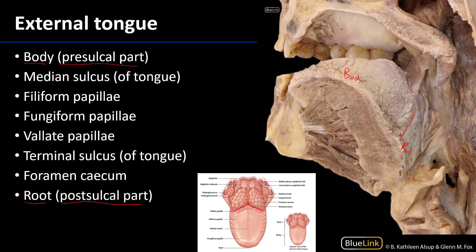The palatoglossal fold marks the boundary between the oral cavity and the oropharynx. There is also a median sulcus — because this donor has been sagittally sectioned we don't see it on the specimen, but we can demonstrate it in the illustration. It is that slight indentation that sagittally divides the right and left body of the tongue.